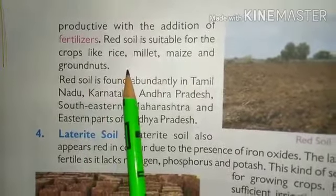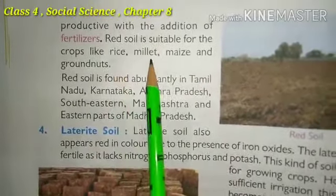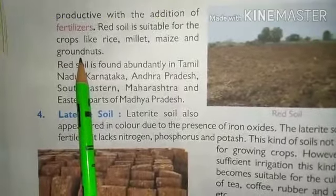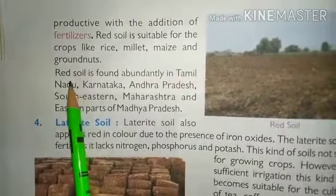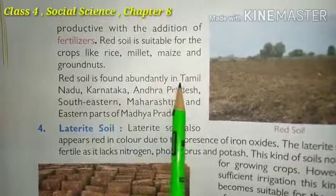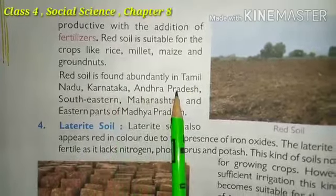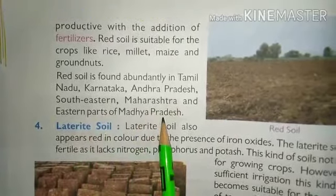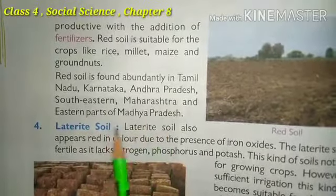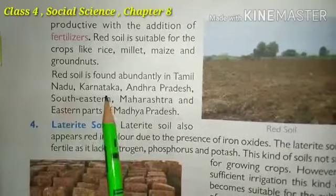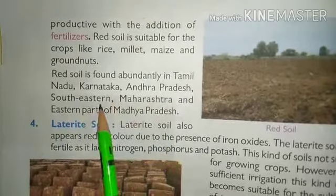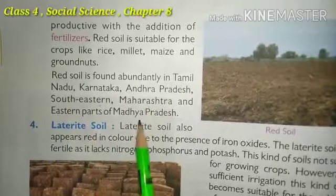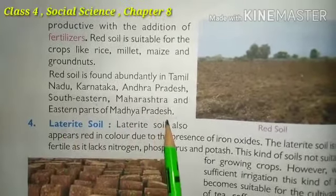The red soil is very suitable for rice, millet, maize, groundnut, and peanuts. Red soil is found abundantly in Tamil Nadu, Karnataka, Andhra Pradesh, south-eastern Maharashtra, and the eastern part of Madhya Pradesh. The red soil is found in Tamil Nadu, Karnataka, Andhra Pradesh's south-eastern parts, Maharashtra, and the eastern parts of Madhya Pradesh.